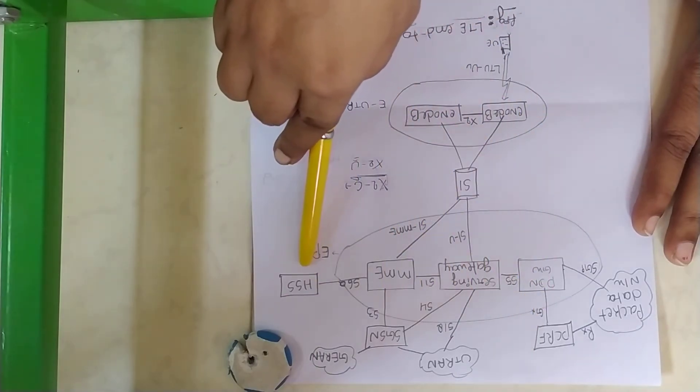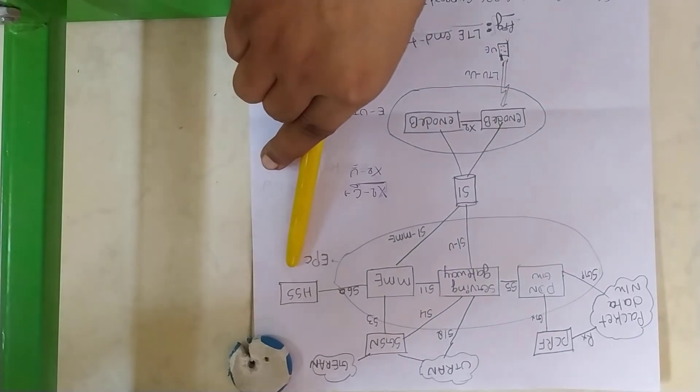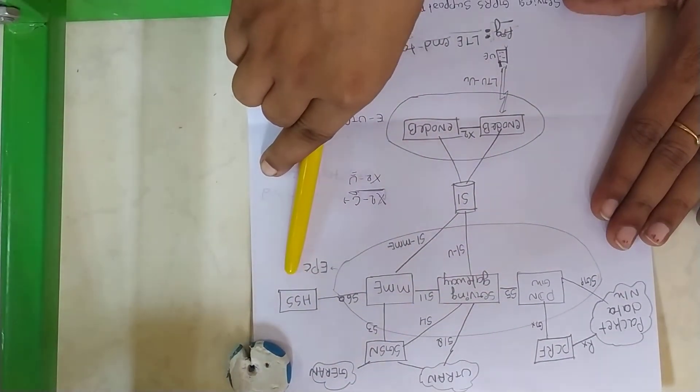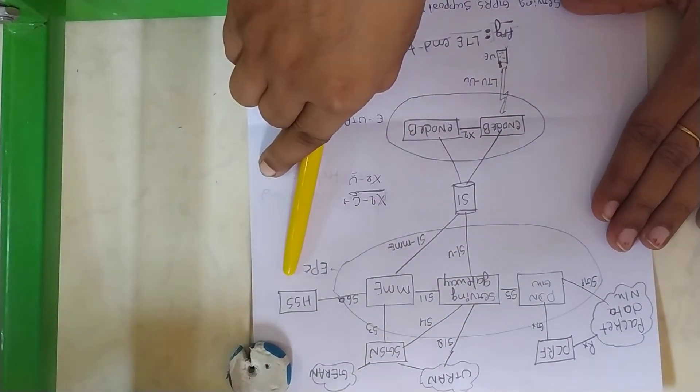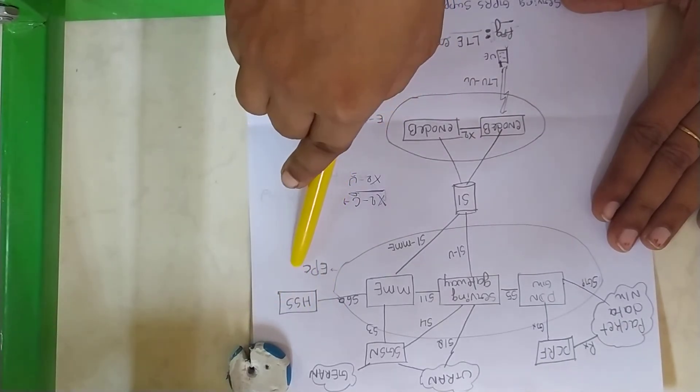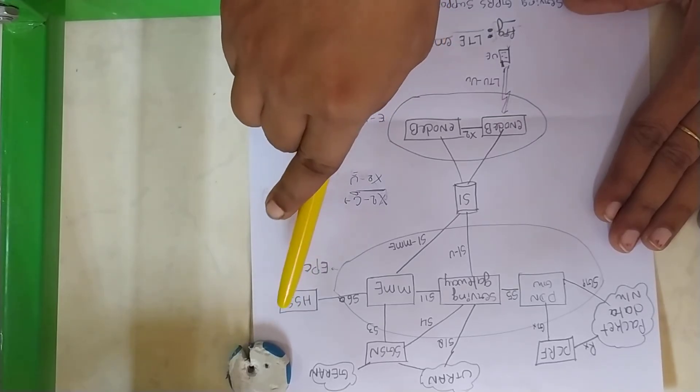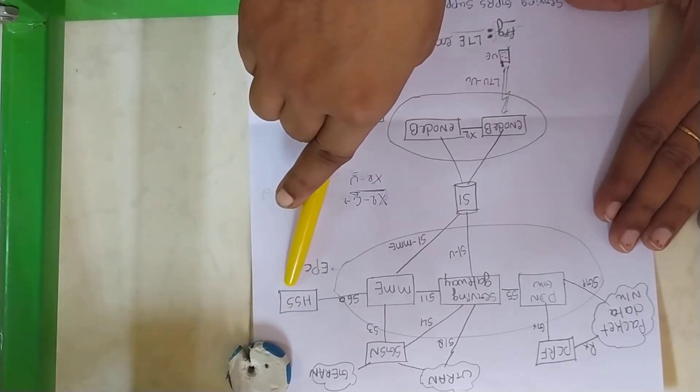HSS is Home Subscriber Server. It acts like a database. User information is stored in the HSS.